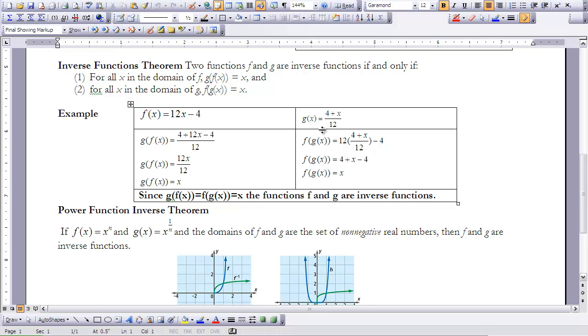Now on the other side, I'm going to try it again, only I'm going to go f(g(x)). So I'm going to take g(x) and I'm going to insert it into this one over here. So now I get 12 times (4 + x)/12. 12s are going to cancel. I'm going to get 4 + x - 4.